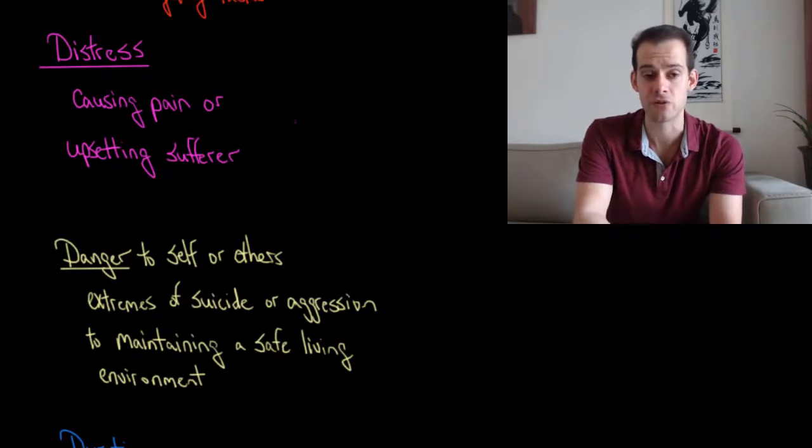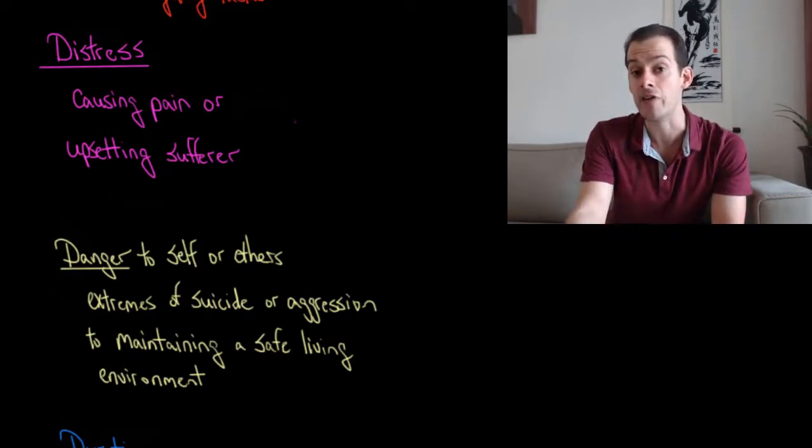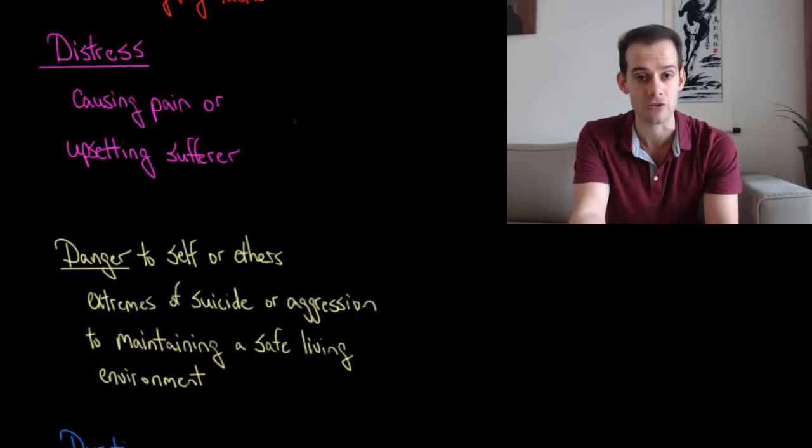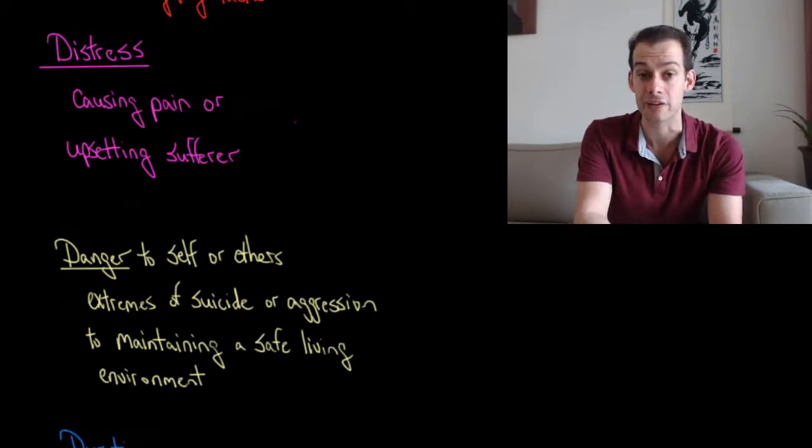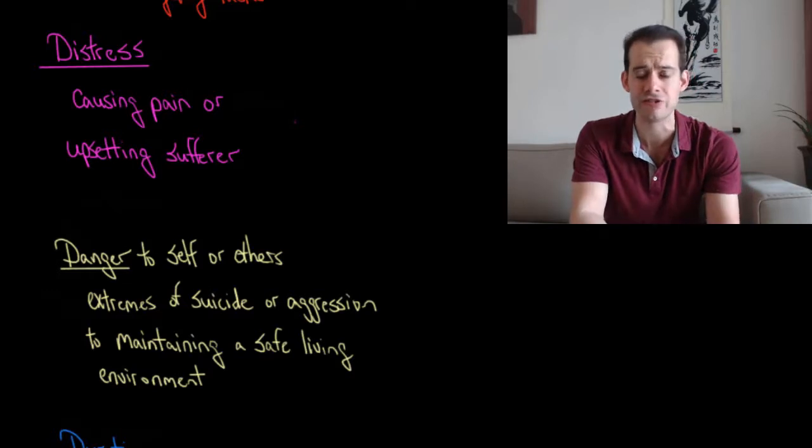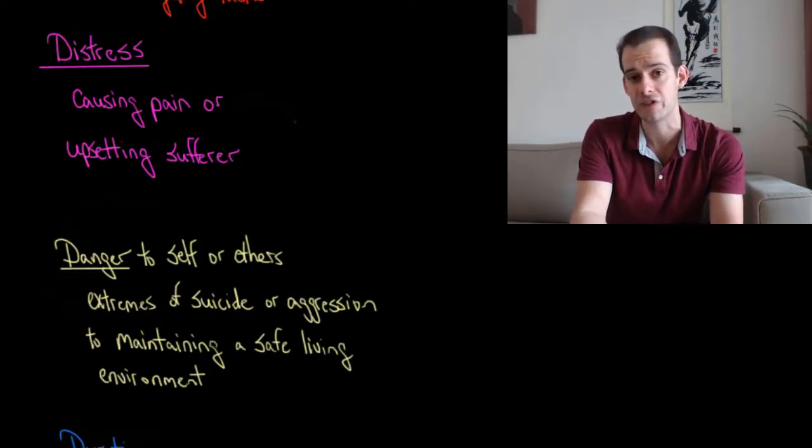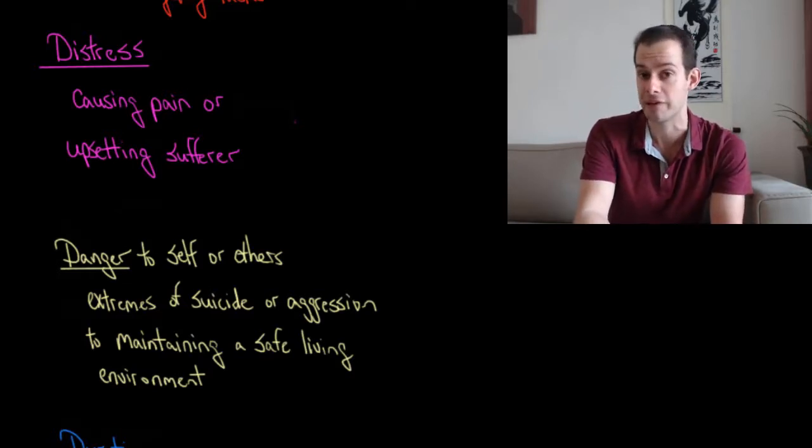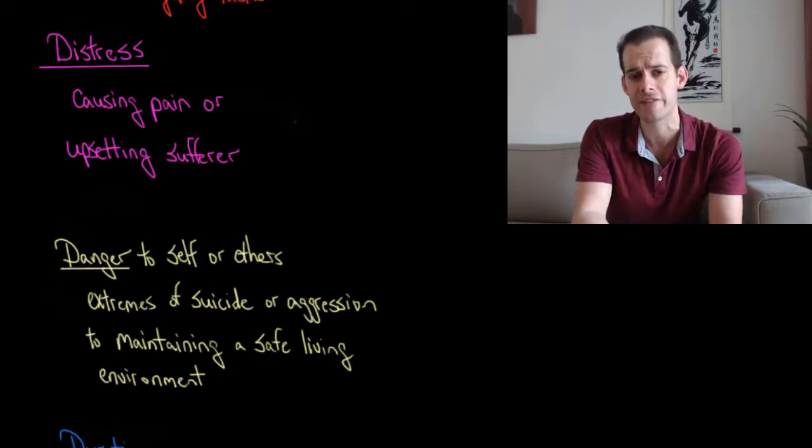Now, there are a few exceptions where the distress is on other people. So if you have something like antisocial personality disorder and you inflict harm upon other people, but you don't feel bad about it, you don't show remorse. In that case, we'd say there's still distress, even if the person who's engaging in these behaviors is not the one experiencing the distress. But generally, we're going to think of distress as happening to the person who is exhibiting the symptoms.